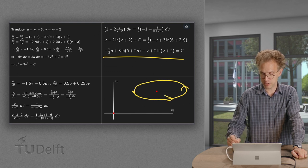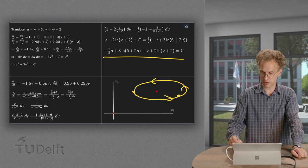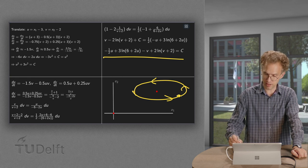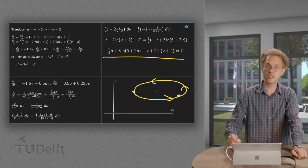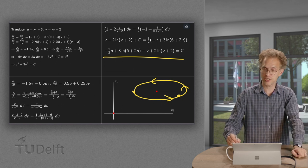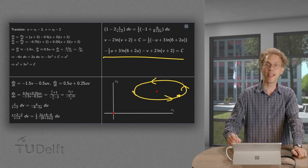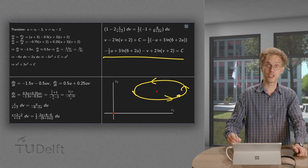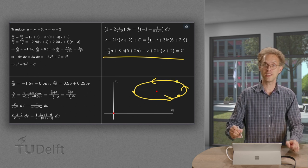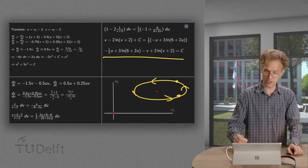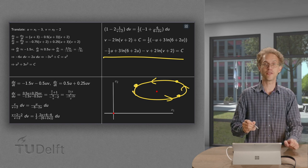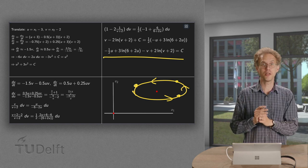So actually we have something like this. So what happens? First if we start out here for example, the zebra population increases. Then there's a lot of food for the lions so their population increases. But then there are a lot of lions so zebras do not like that. So the zebra population decreases to a point over here.